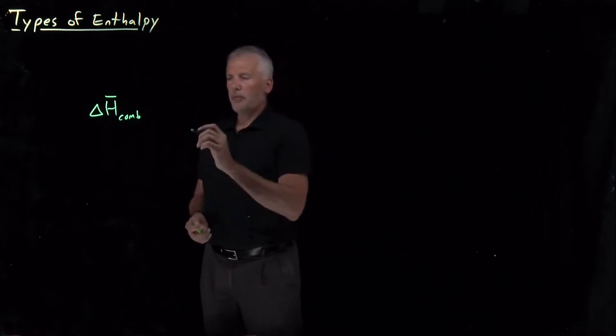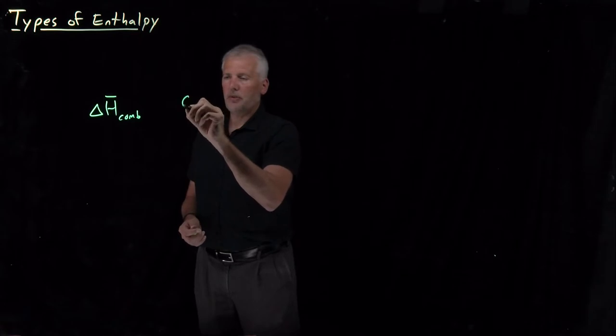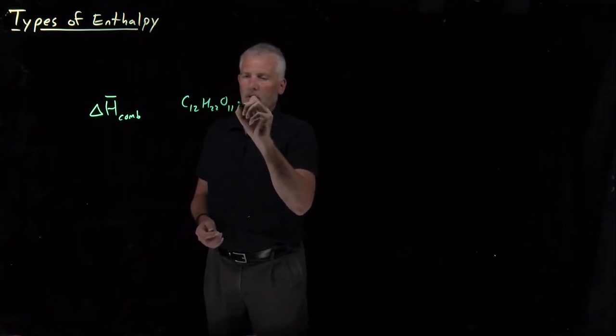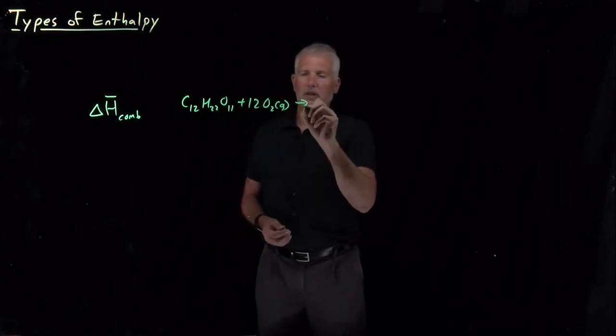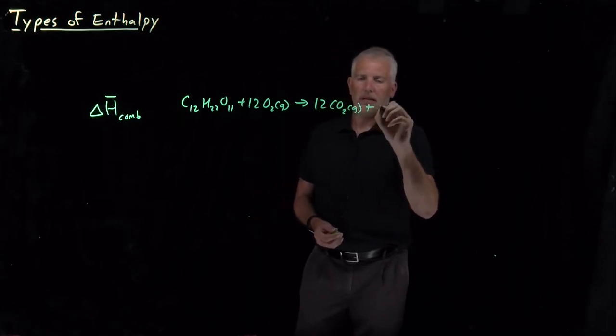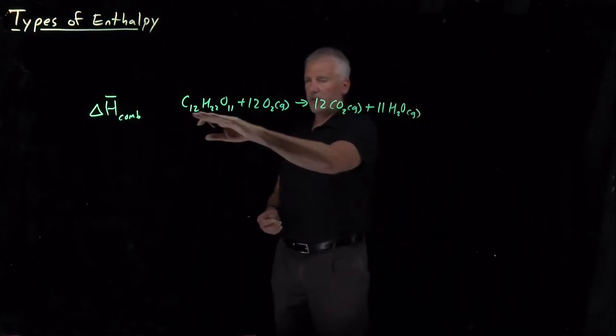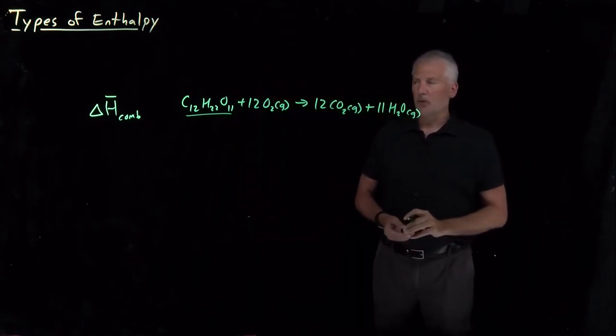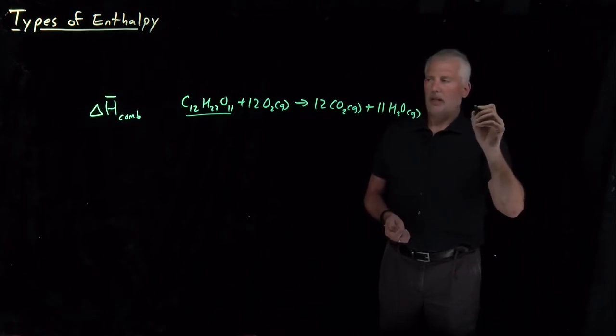Remember, for example, the combustion reaction that we've seen previously is sucrose. If I combine it with the stoichiometric amount of oxygen, it turns into carbon dioxide and water. So that's a specific example of an enthalpy of combustion, specifically the enthalpy of combustion of sucrose.